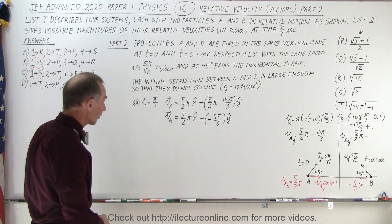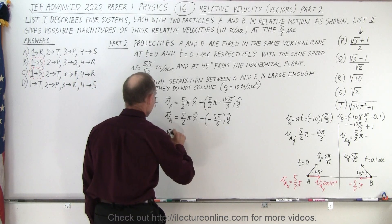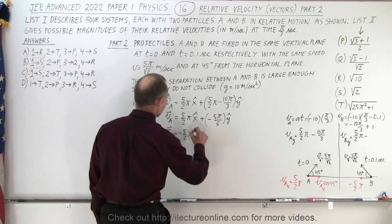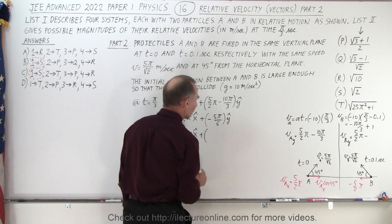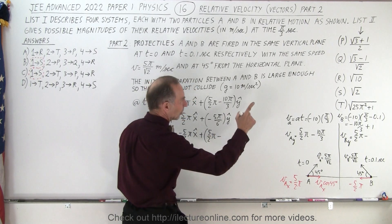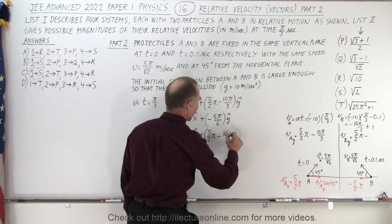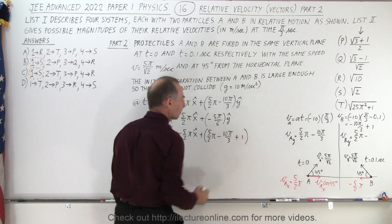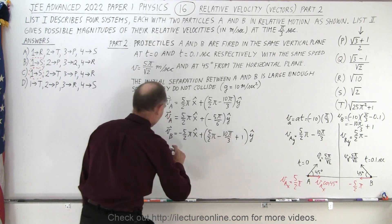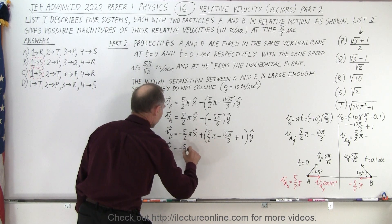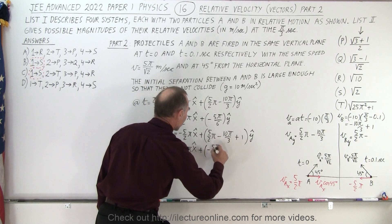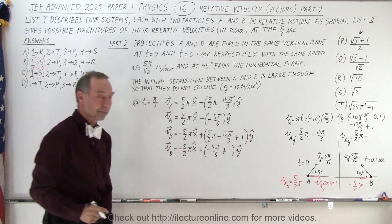Now for the velocity of B: in the x direction it is minus 5π over 2, and in the y direction we have the initial velocity 5π over 2 minus the acceleration term 10 times (π over 3 minus 0.1). This simplifies to: VB equals (−5π/2) x-hat plus (−5π/6 + 1) y-hat.